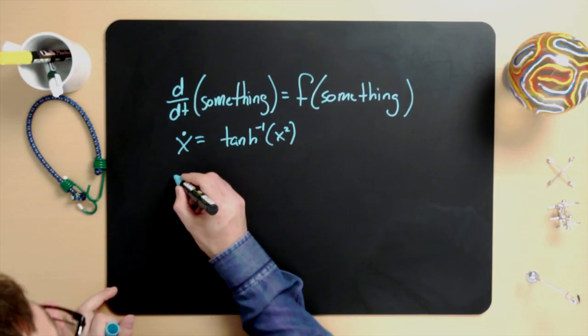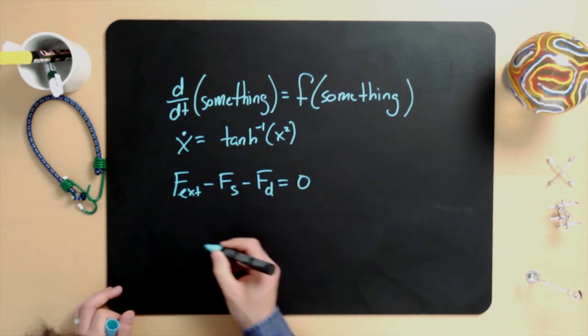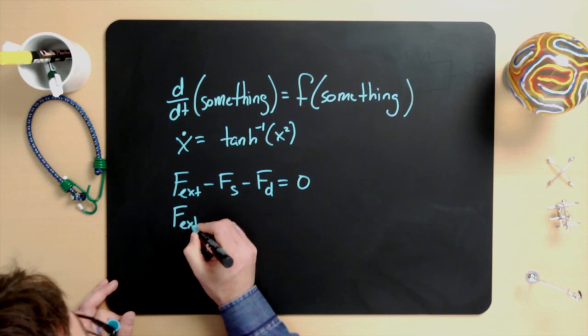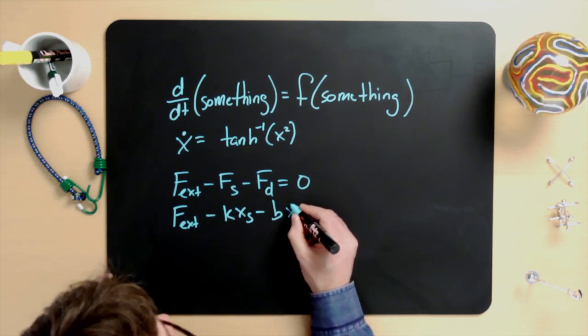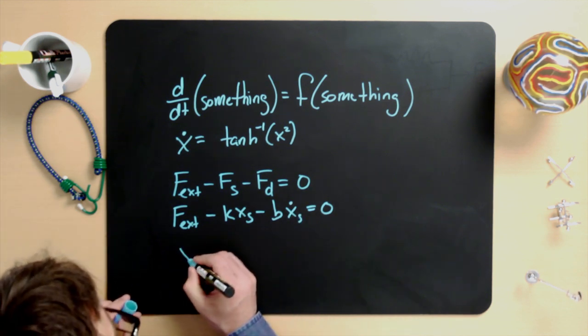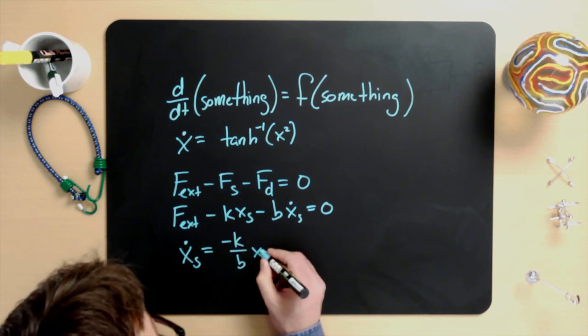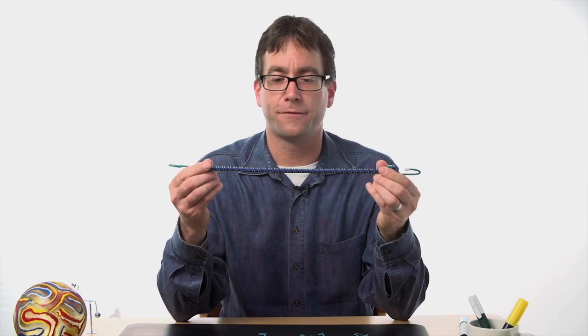Let's finish with another example and go back to the spring and damper model, but now allow the external force to be non-zero. This means f_external minus f_s minus f_d equals zero. If we substitute in the constitutive laws, we get f_external minus k·x_s minus b·v_d, where v_d equals x_s-dot. Solving for x_s-dot, we get x_s-dot equals minus k over b times x_s plus f_external over b. This is like pulling on a bungee cord with a constant force.